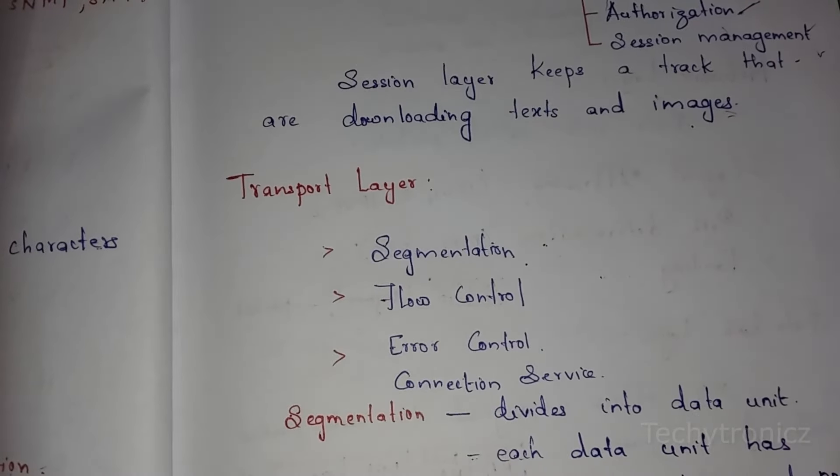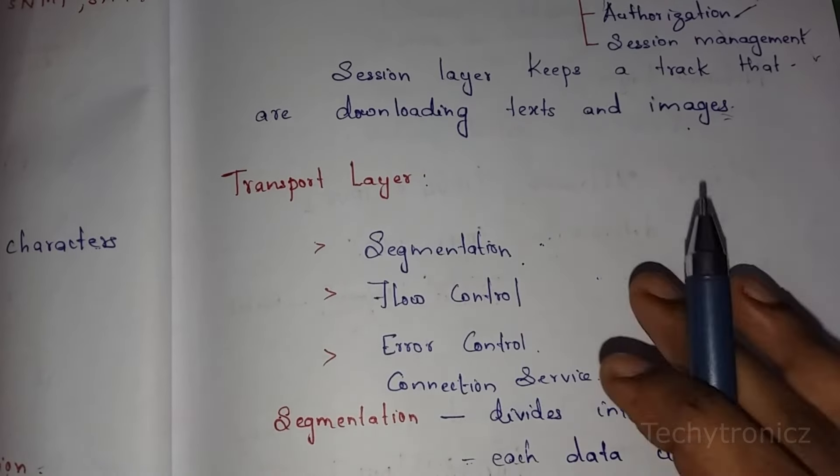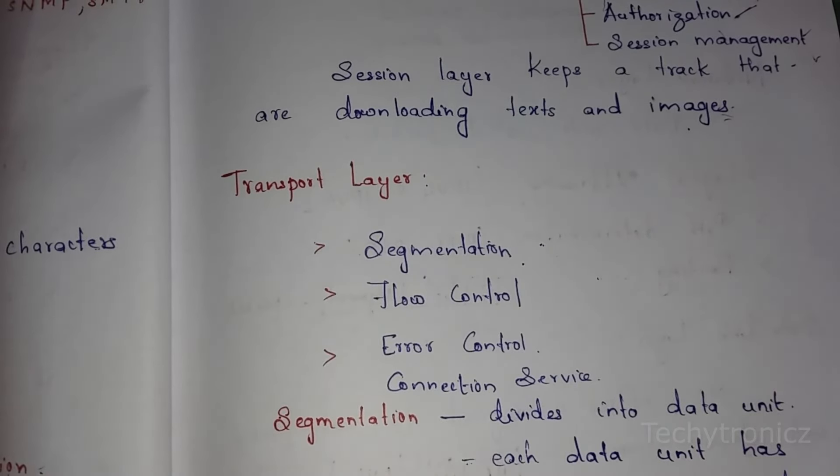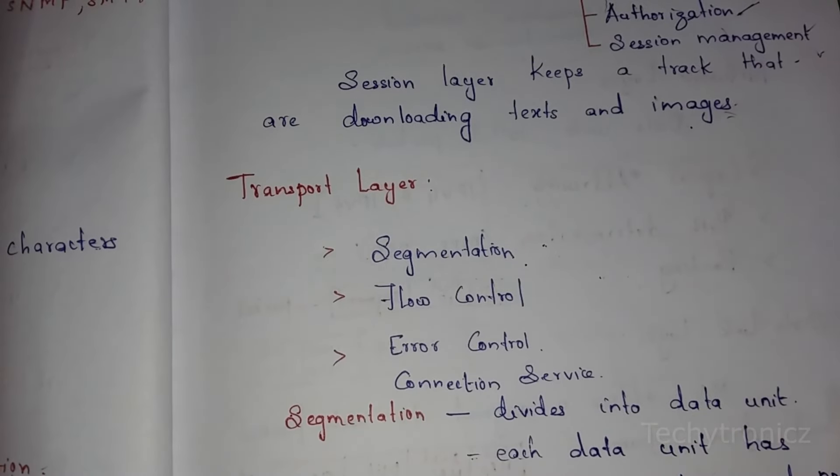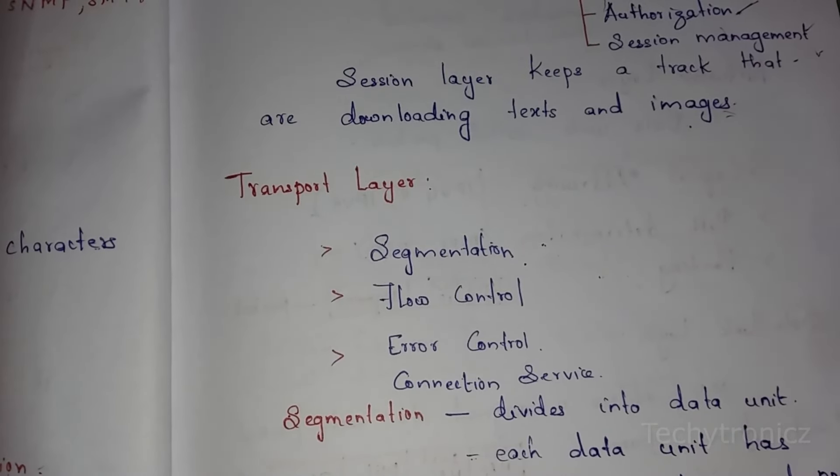On the receiver side, the physical layer receives the bitstream, then passes it to the data link layer which removes the frame, then the network layer extracts the packet, then the transport layer extracts the segment, up through session, presentation, and application layers. These are the 7 layers of the OSI model: physical, data link, network, transport, session, presentation, and application layer. Thank you, students.